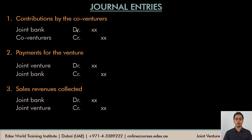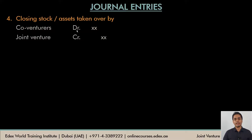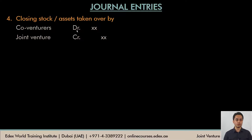When goods are sold or services provided, customers pay money which is transferred to the joint bank account — so the joint bank account is debited and the joint venture account is credited with the income. For closing stock taken over by a co-venturer, the co-venturer's account is debited and the joint venture account is credited, reducing the cost previously recorded and charging the co-venturer for the asset withdrawn from the joint venture business.